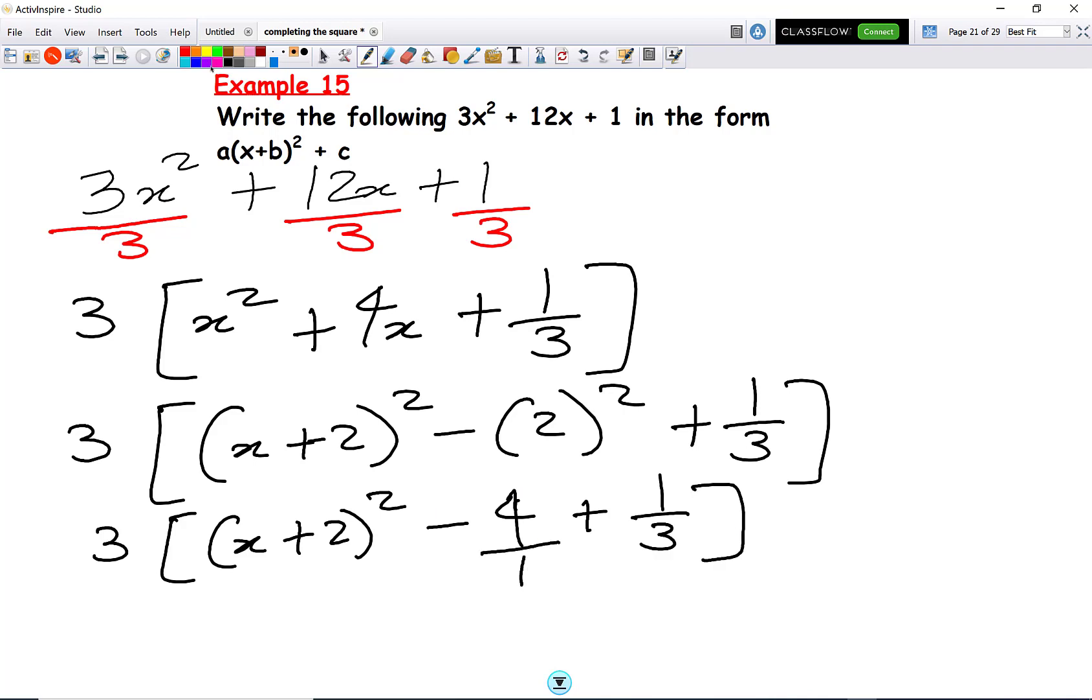this is 4 over 1, so I can times this by 3. So I get 3[(x + 2)² - 12/3 + 1/3].